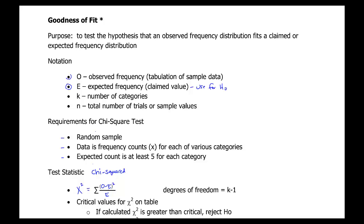The test statistic in this test is called chi-squared, and it's just a big script x-squared — again, it's a Greek letter. To calculate chi-squared, you take your observed value from your sample minus the expected value from your null hypothesis, square the difference, and divide by the expected value. You do that for each category and add all of them together, and that will give you chi-squared.